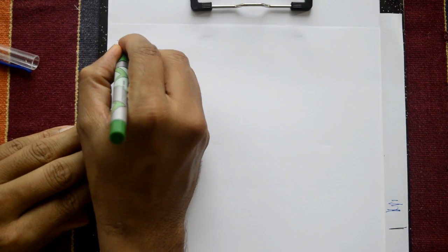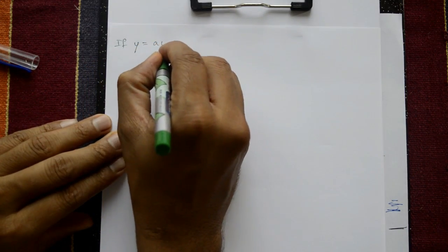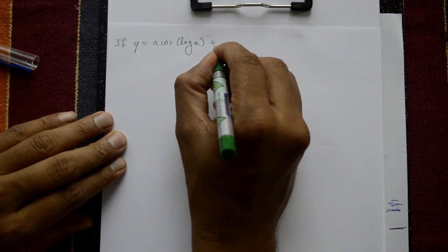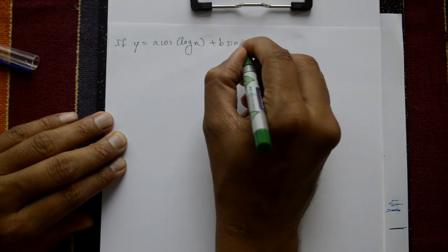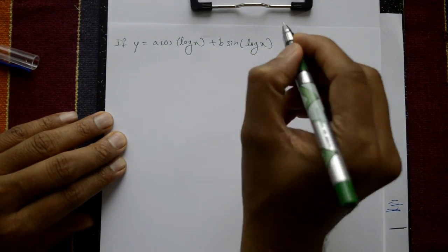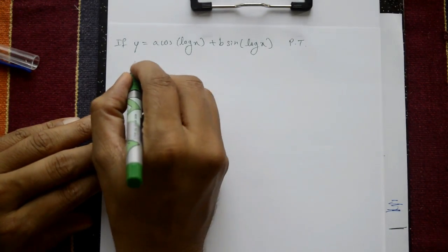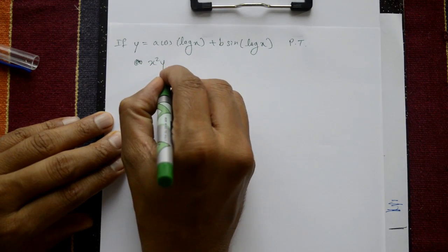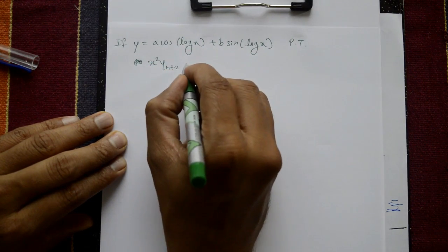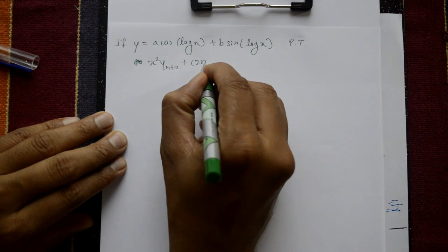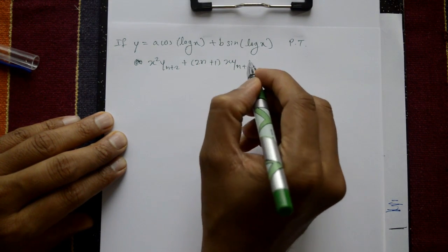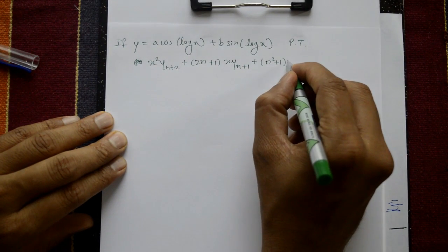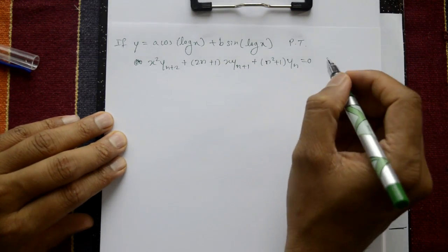Next example. If y is given, y is a·cos of log x plus b·sin of log x. Prove that x square · y_{n+2} plus 2n plus 1 into x · y_{n+1} plus n square plus 1 into y_n equal to 0.